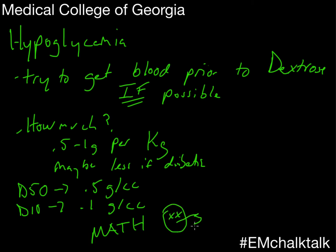If you're using D20, the same math applies. So if you want to give half a gram per kilo and you're using D20, two and a half cc's of D20 gives you half a gram per cc worth of dextrose. So two and a half cc's per kilo gets you where you're going.